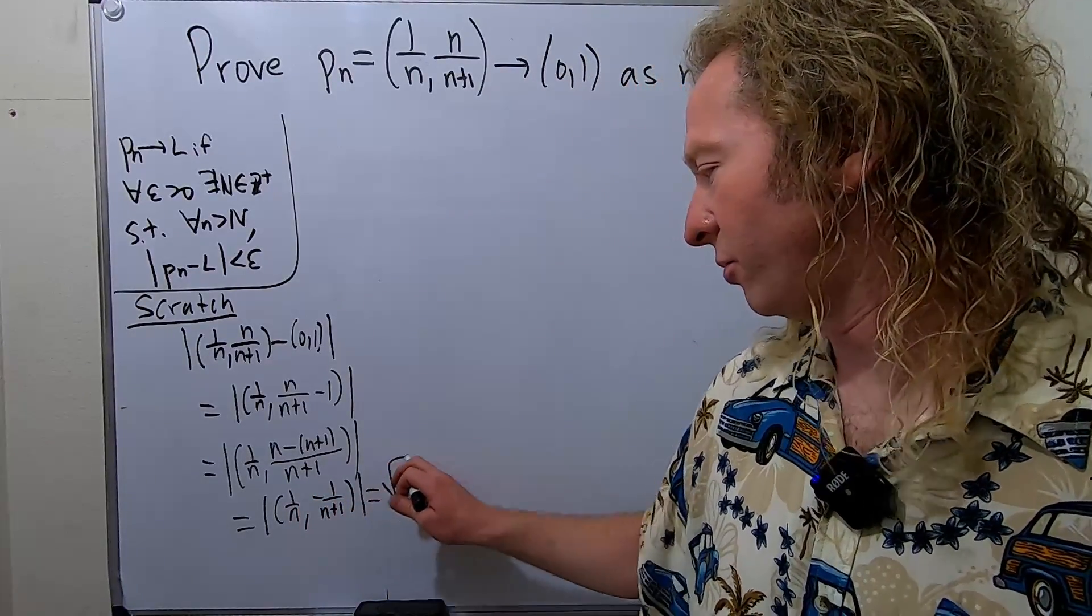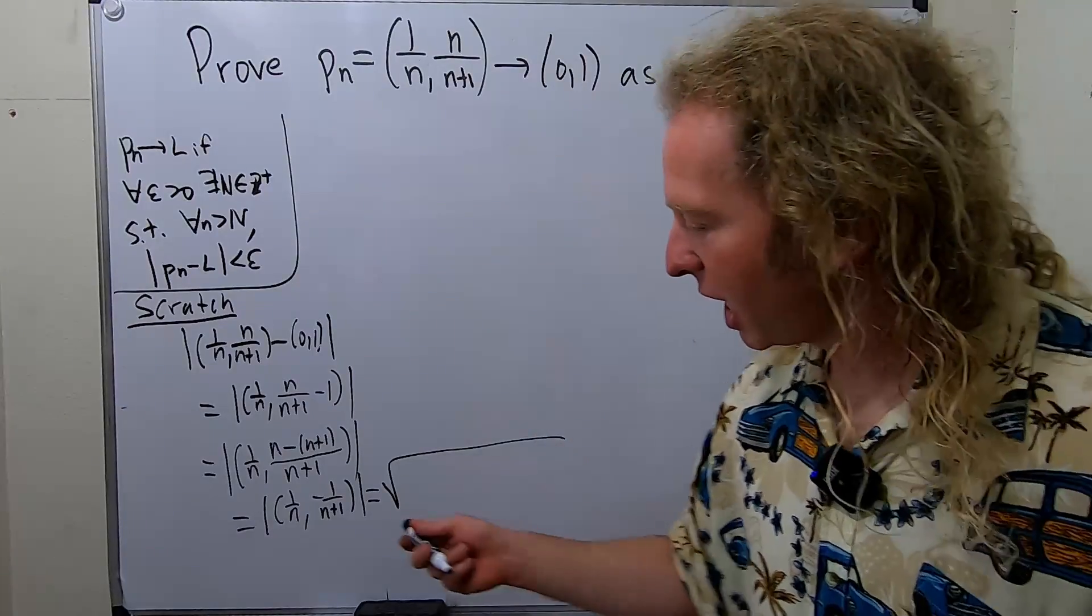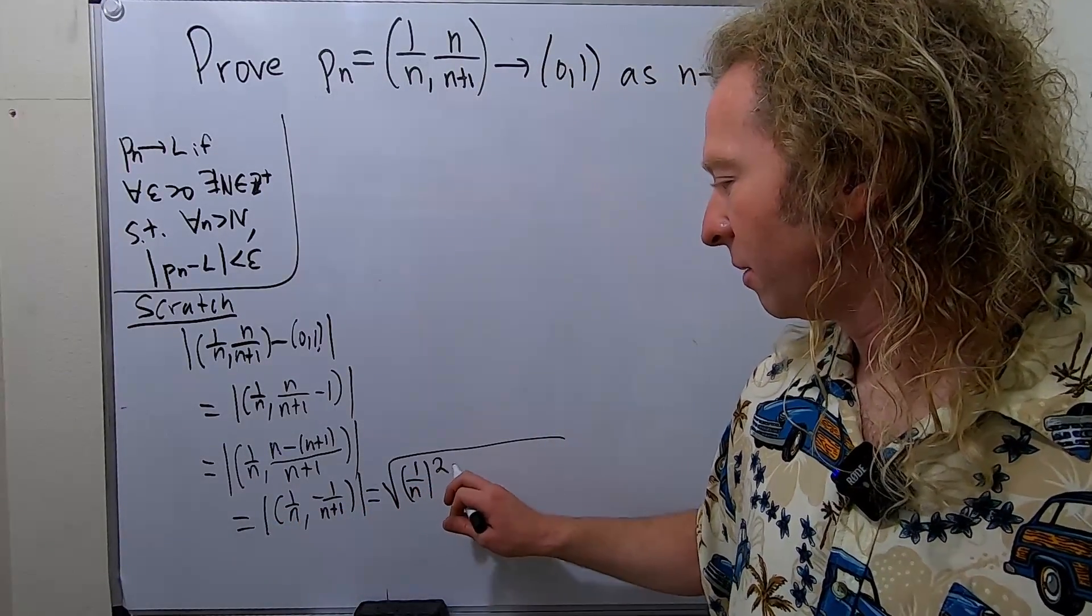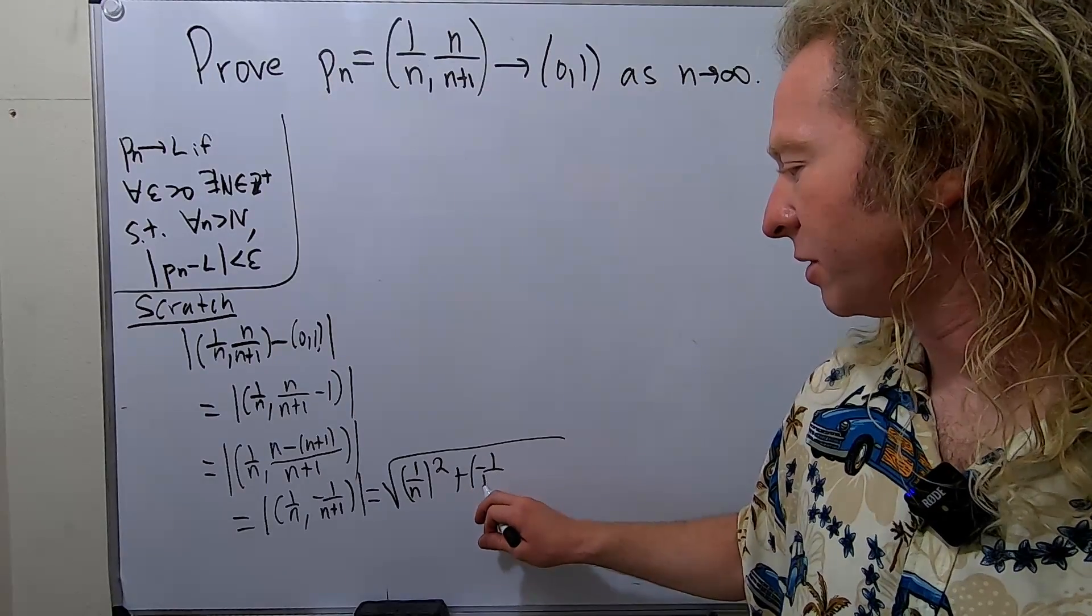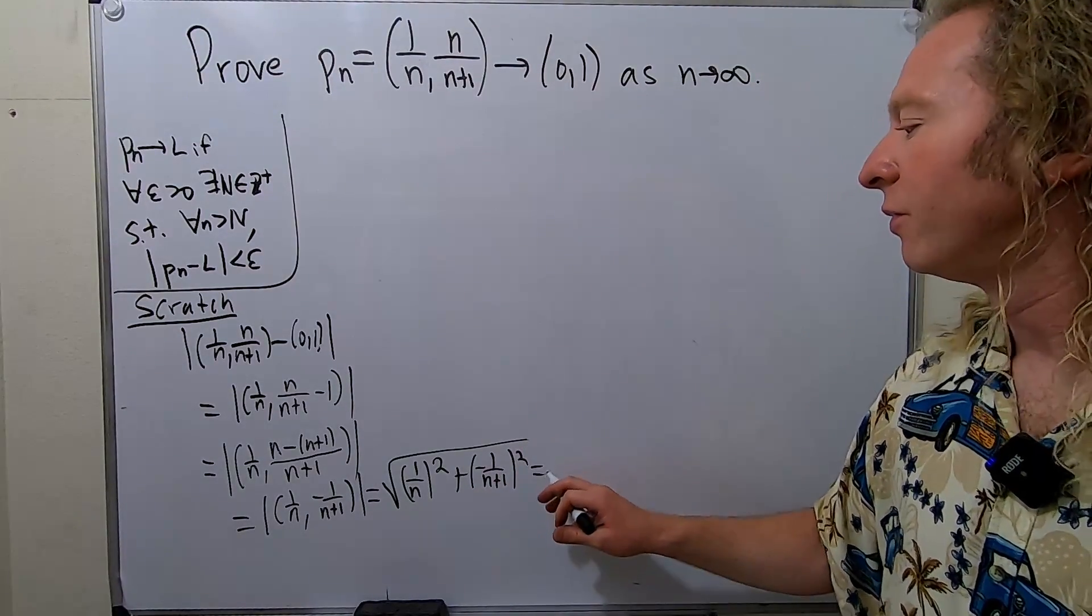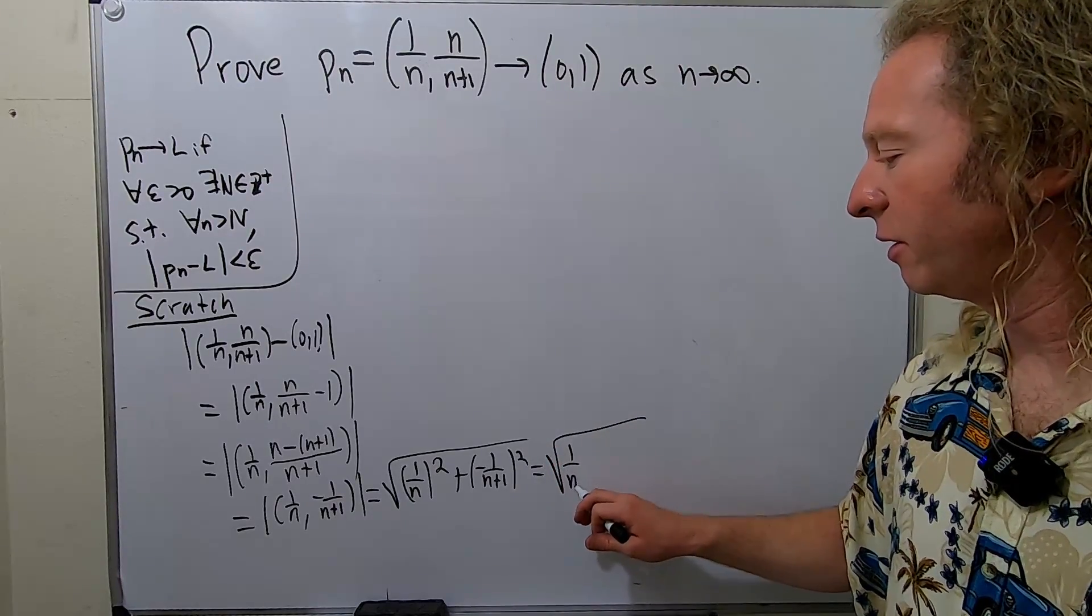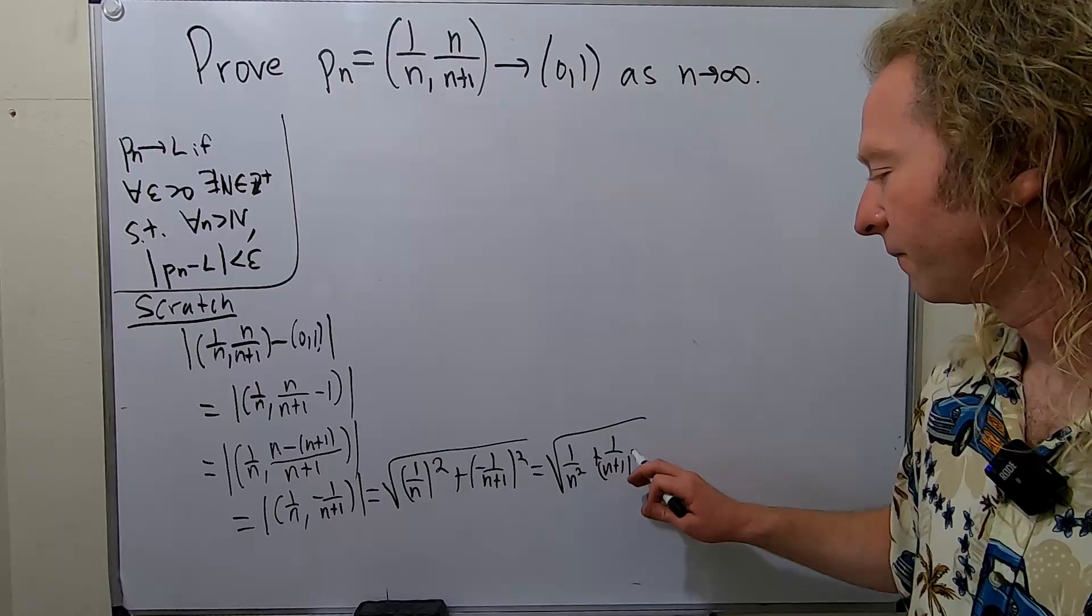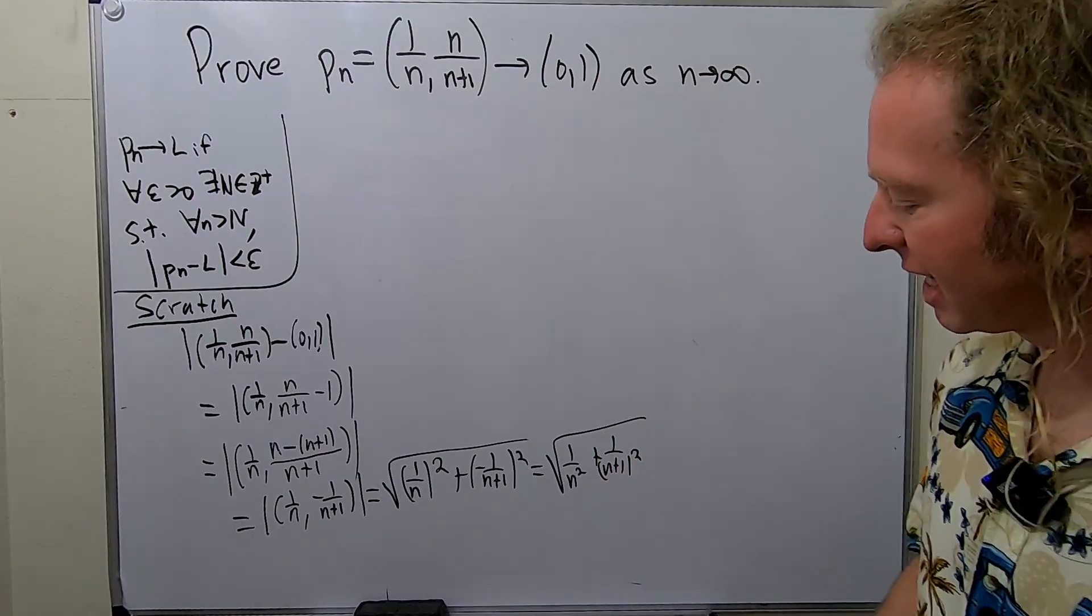This is equal to the square root. This is where the norm comes in. And you square each of the components. This is 1 over n squared plus negative 1 over n+1 squared. So this is equal to square root 1 over n squared plus 1 over n+1 squared. We want to make this less than epsilon.